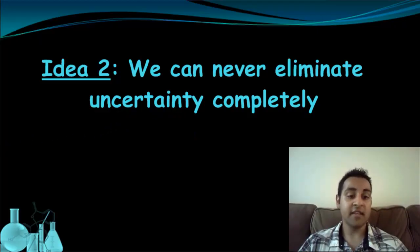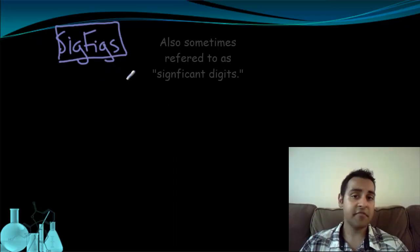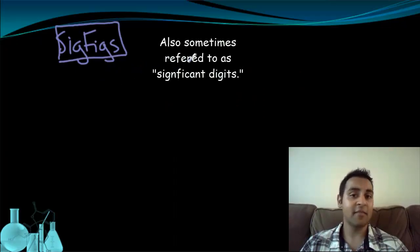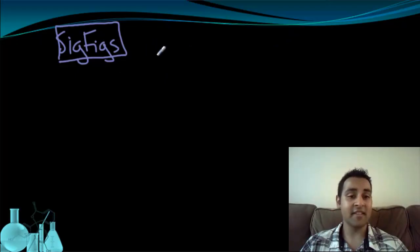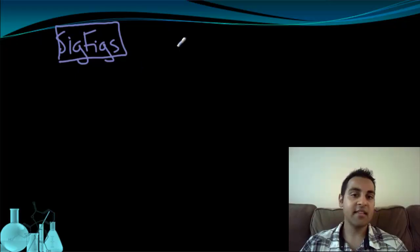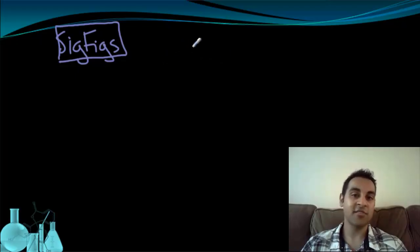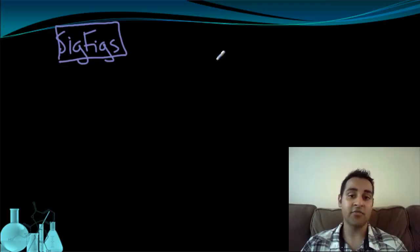That brings us to the idea of significant figures, or sig figs. Significant figures are one way of identifying and representing the amount of uncertainty in a measurement. They're not the only way, and probably not the best way, but they are a convenient and easy-to-handle method of dealing with uncertainty in measurements. There are a bunch of rules about identifying significant figures that you can read in any textbook or web page. Instead, let's try to get an understanding of how to approach significant figures from an uncertainty standpoint.